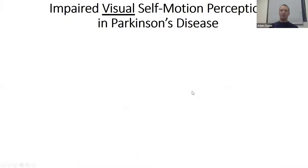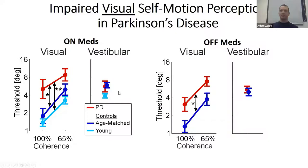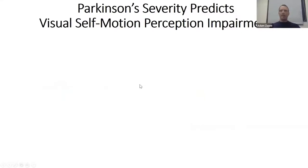When we compare vestibular performance, surprisingly we found that vestibular perception was not worse in Parkinson's. Across the group, Parkinson's patients had higher thresholds than controls — higher thresholds mean worse performance — whereas vestibular performance was unimpaired. We saw this whether patients were on or off medications. So the first result is that visual self-motion perception seems impaired in Parkinson's, while vestibular is not.